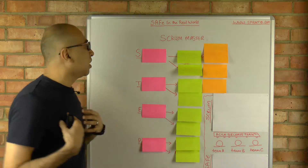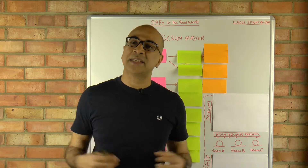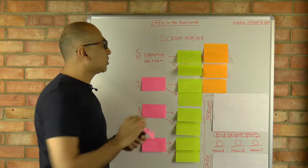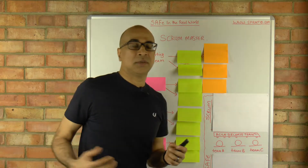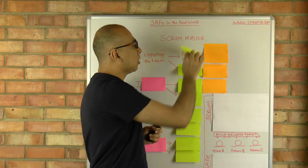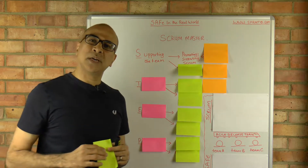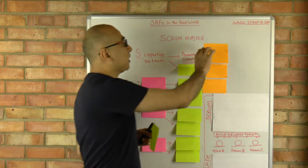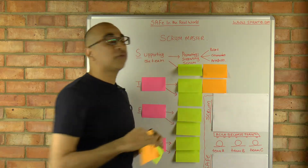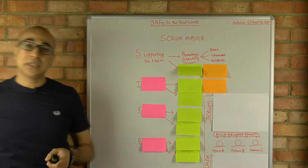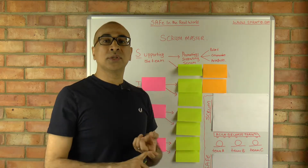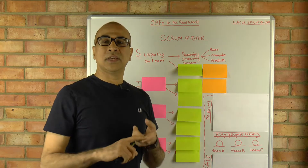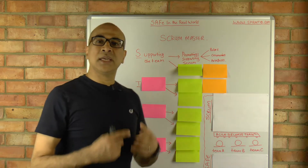In my opinion, a servant leader has a number of different characteristics. The first is that the Scrum Master should support the team. Supporting the team means promoting Scrum values. Within that broad framework, you can think of three elements: the roles — which include the Scrum Master, the product owner, and the delivery team — and then the ceremonies.